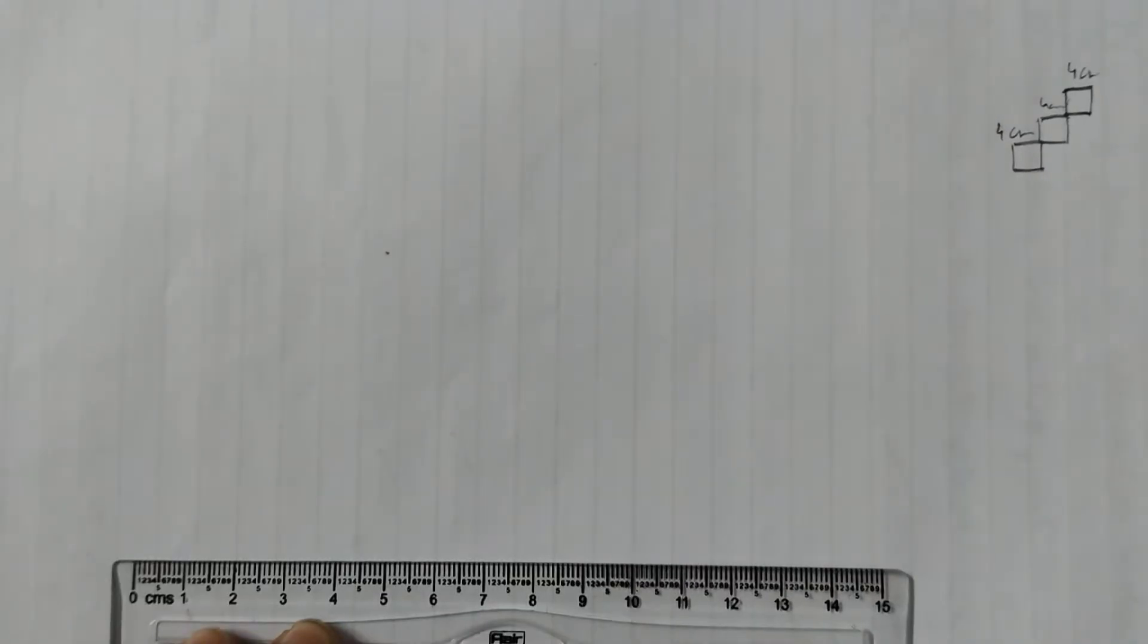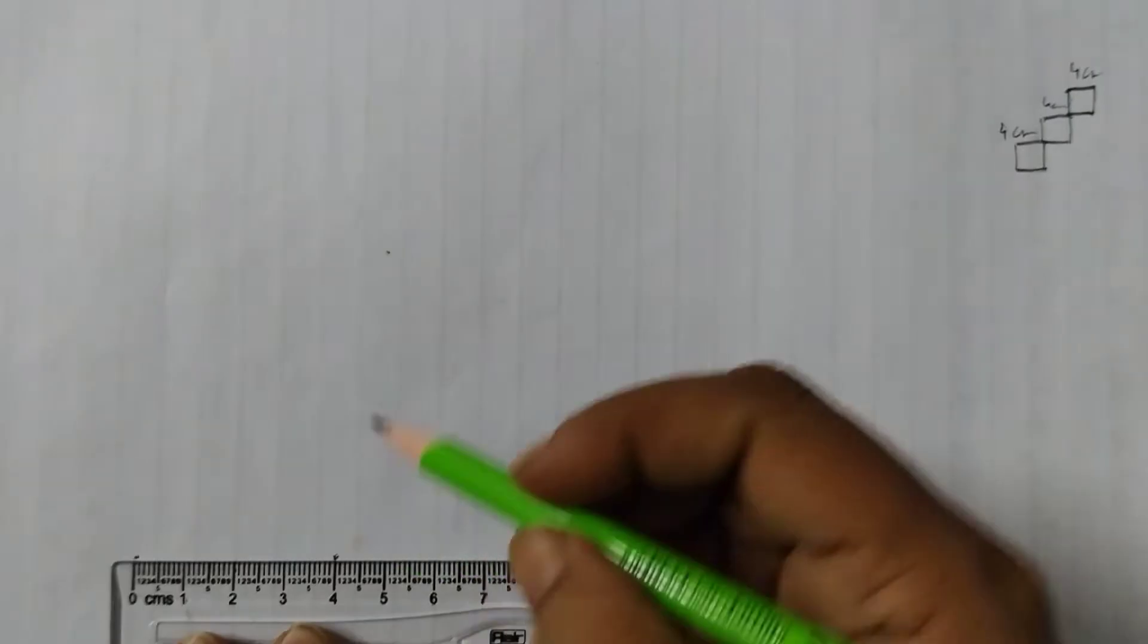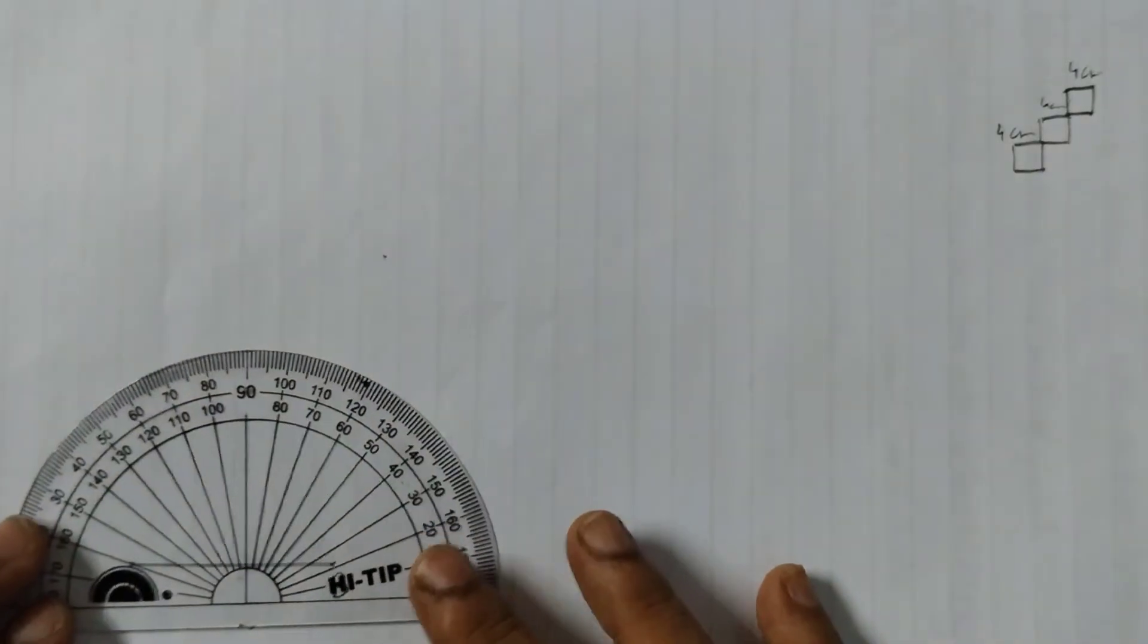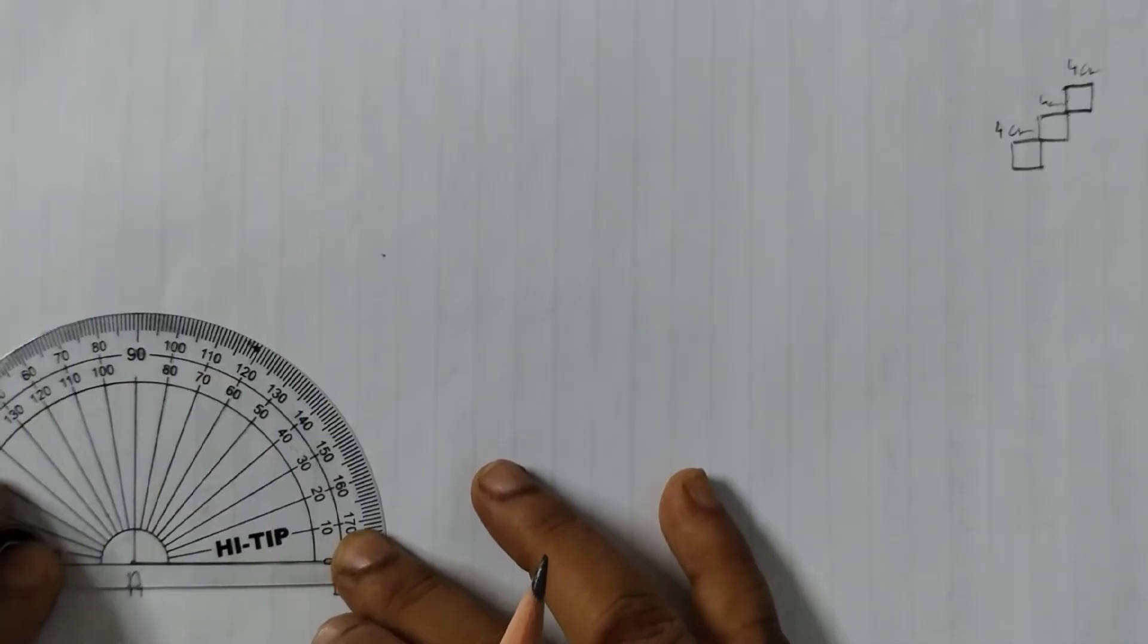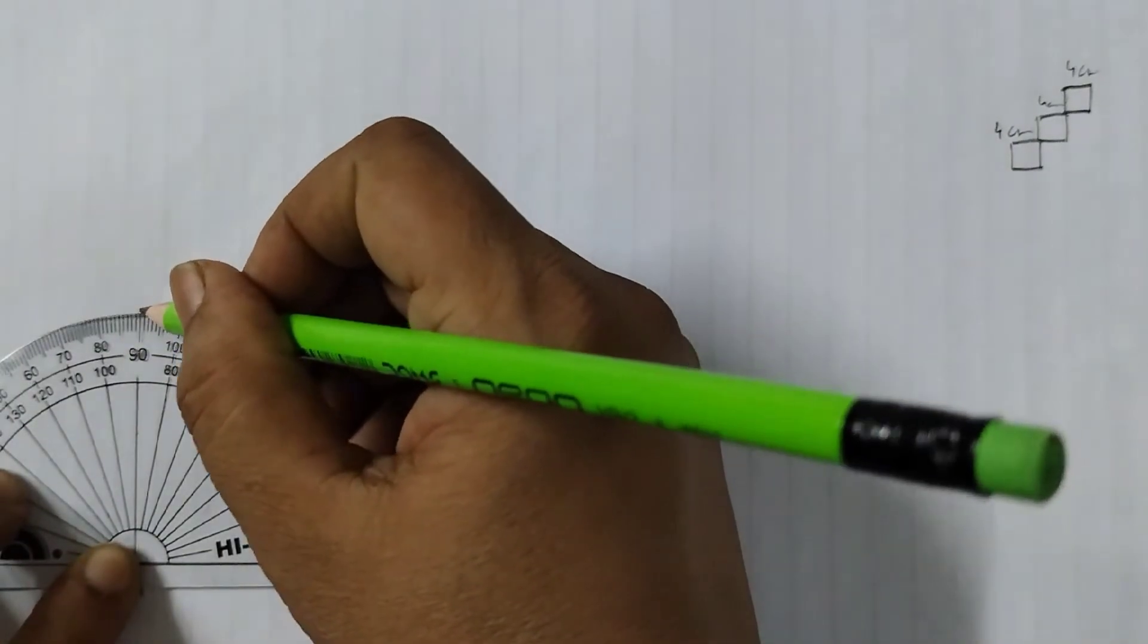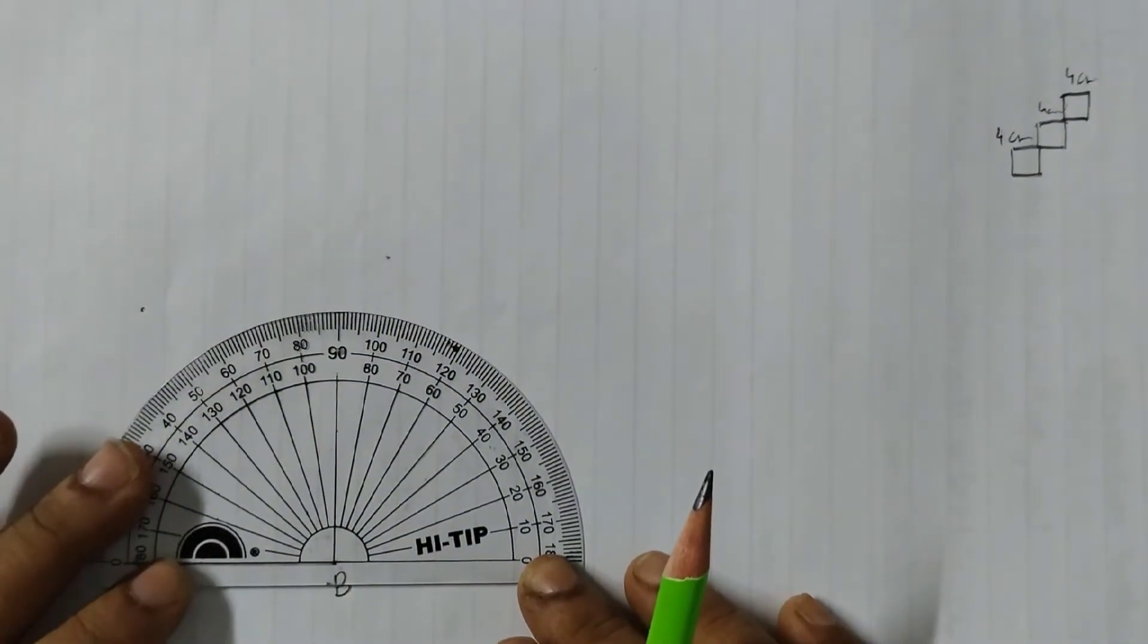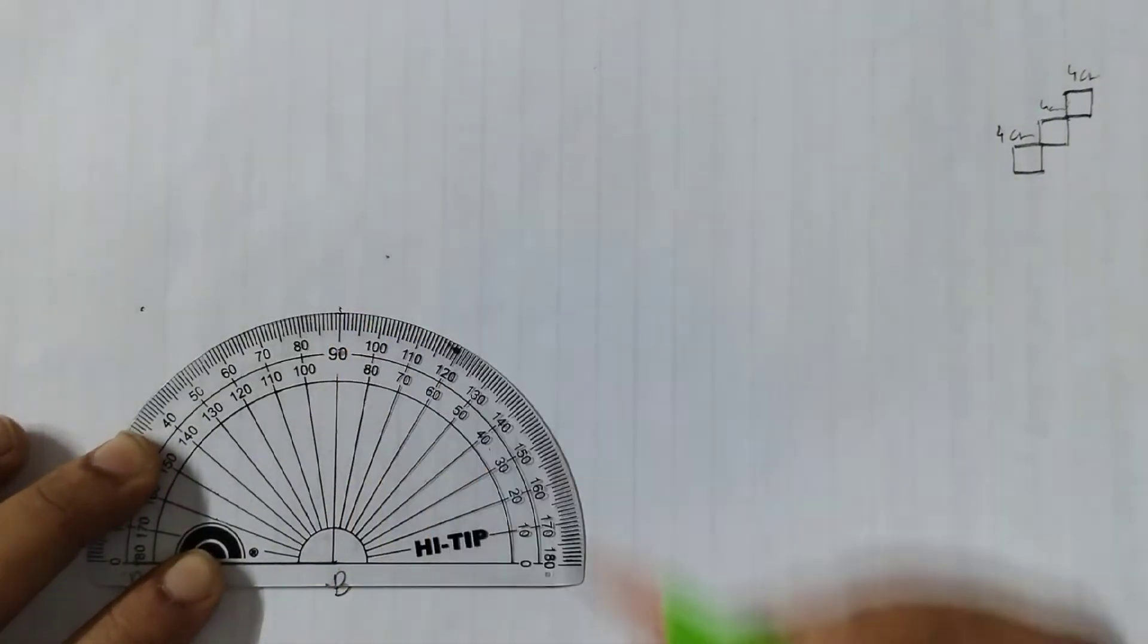First we will take a ruler and we mark the point at 0 and 4. Join these two points. Let's say this is A, B. We will draw perpendicular at A and B. So first A, keep the protractor like this. Mark a point at 90 degrees. And again at B, mark a point at 90 degrees.